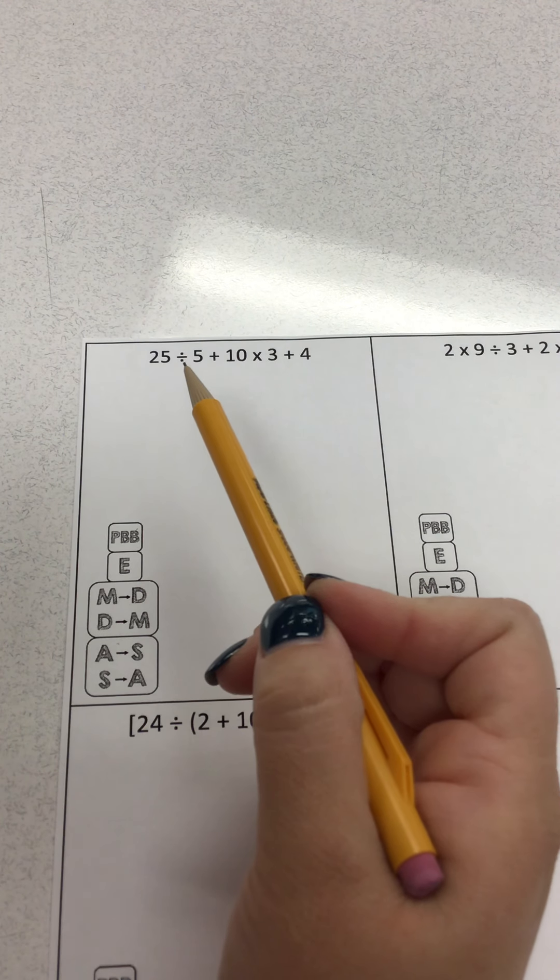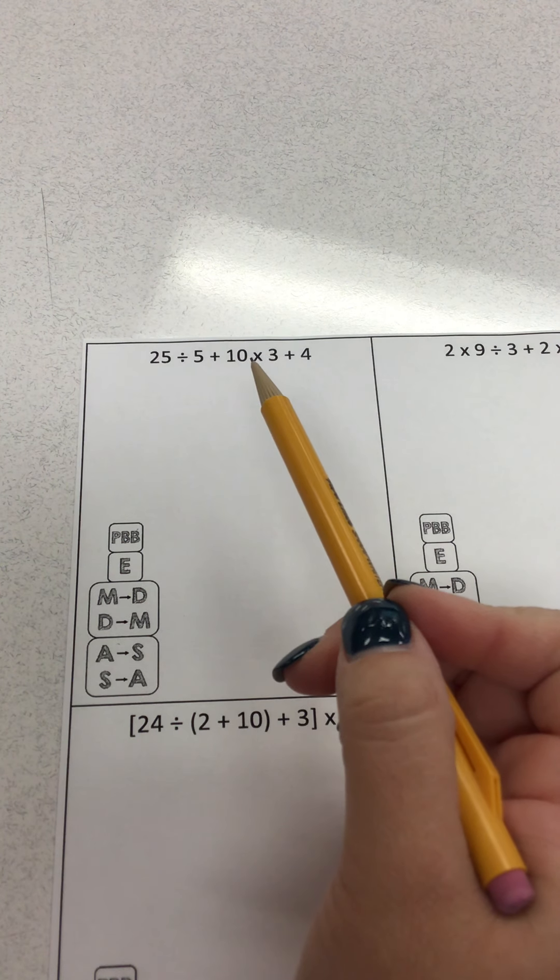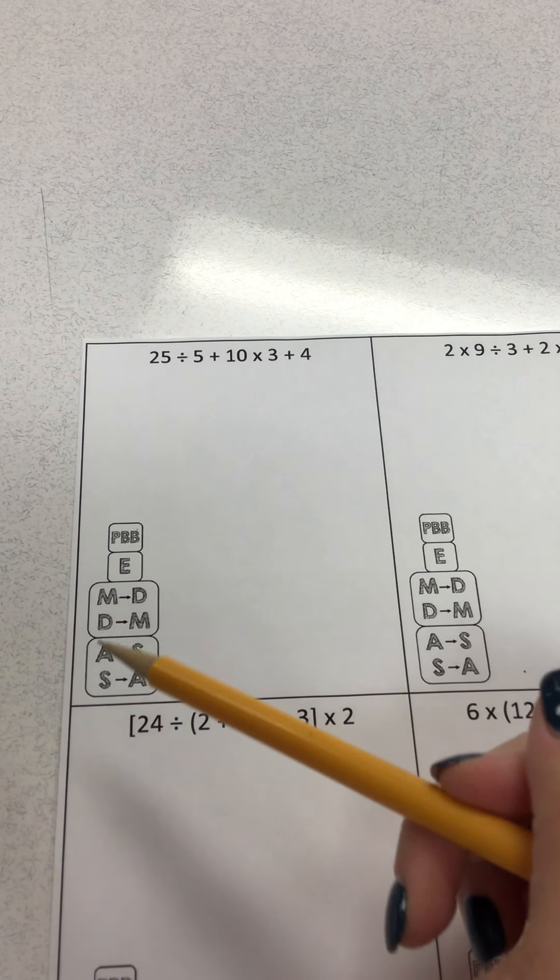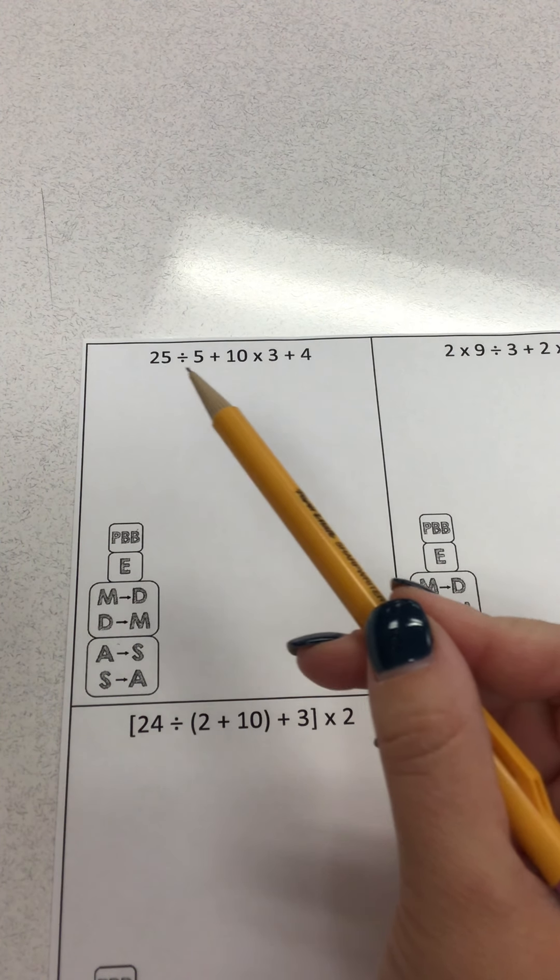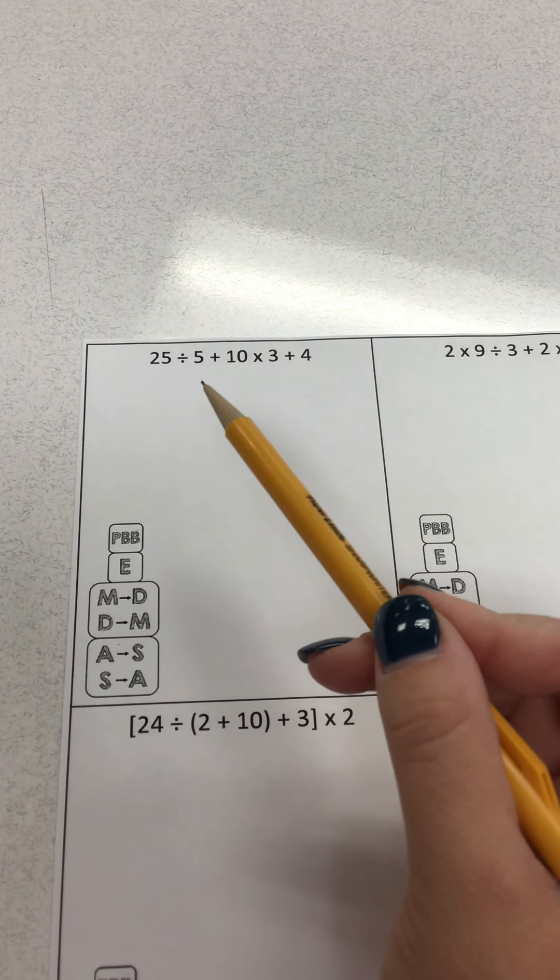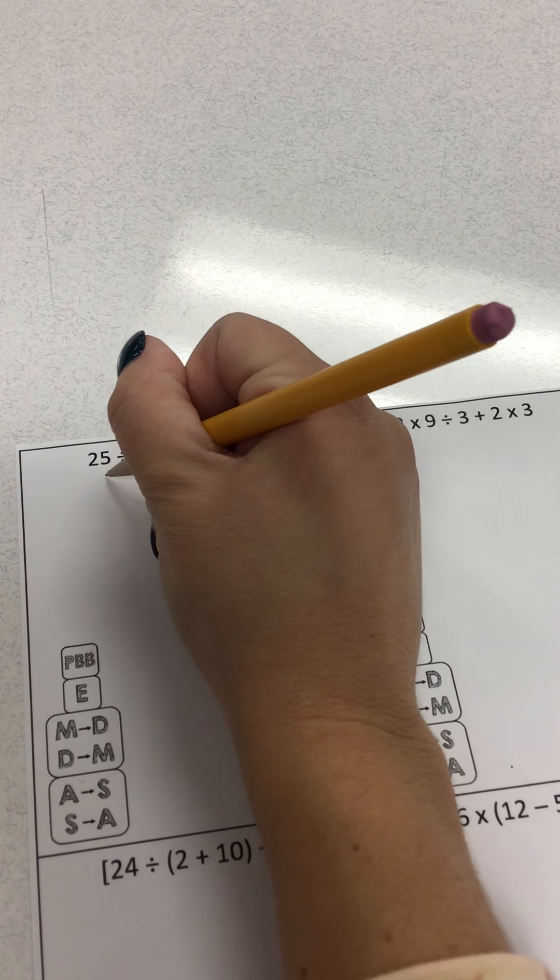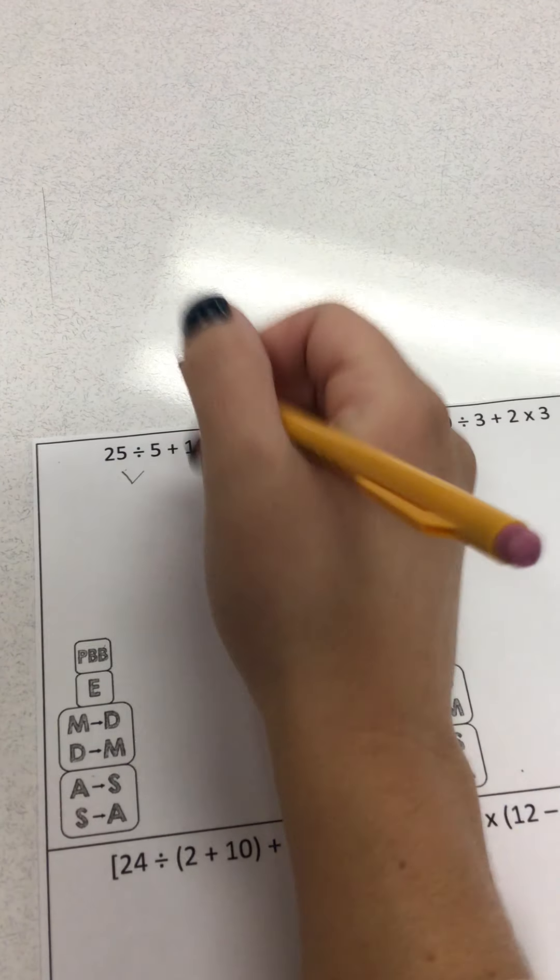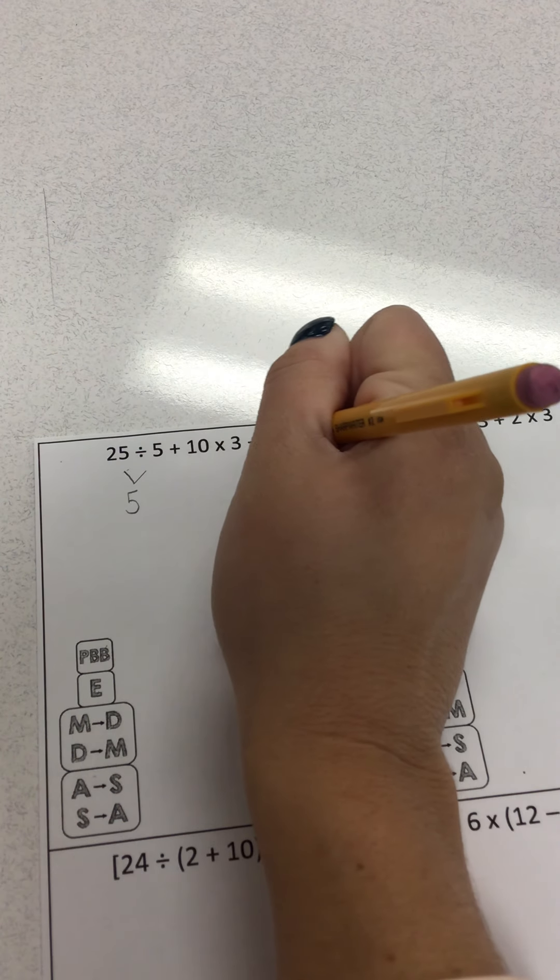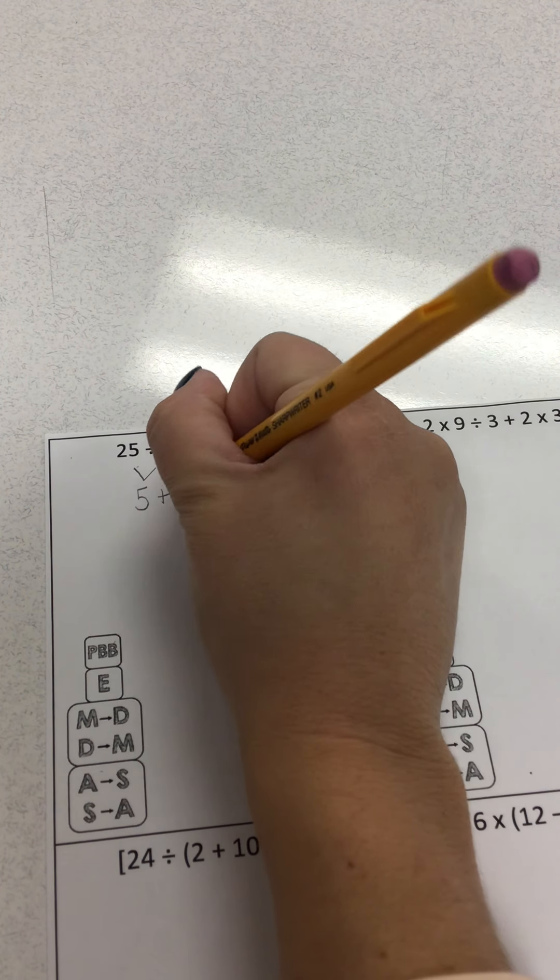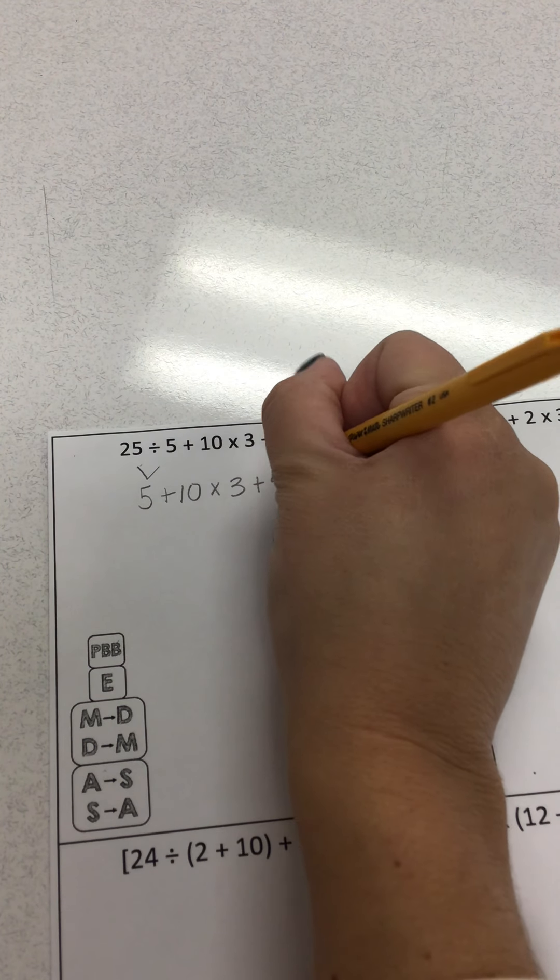So out of these, I have division and multiply. That's before adding and subtracting. Division comes before multiplying when I go left to right. So I'm going to start right here with 25 divided by 5. So I'm going to drop it down like this. 25 divided by 5 is 5. And then I'm going to bring down everything else. So I still have a plus 10 times 3 plus 4.